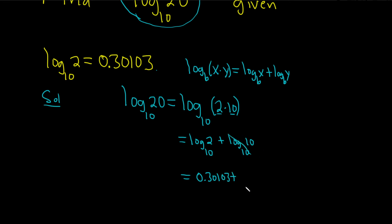And what about this one? Well, this is just 1. Whenever these match, you just get 1. So you end up with 1.30103.